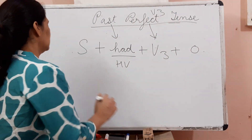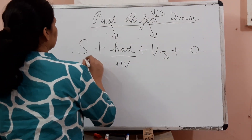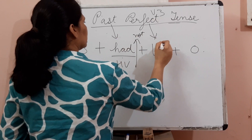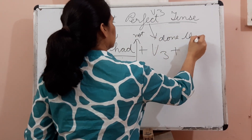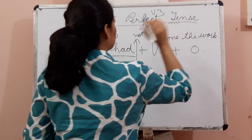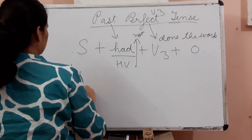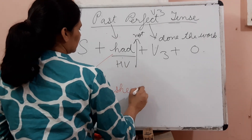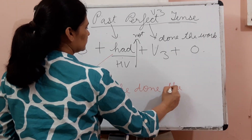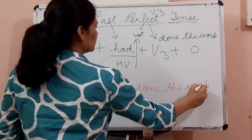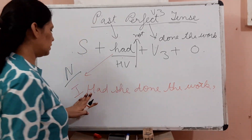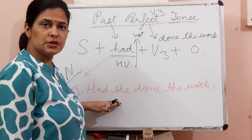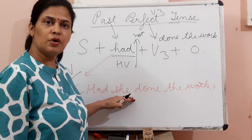How to make the negative of this? The negative is made by adding 'not': 'She had not done the work.' To make the interrogative, we bring 'had' to the front: 'Had she done the work?' This is a normal interrogative question. You can also form other types of questions.